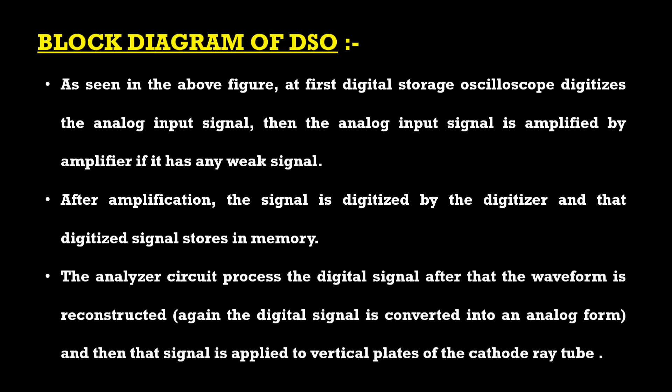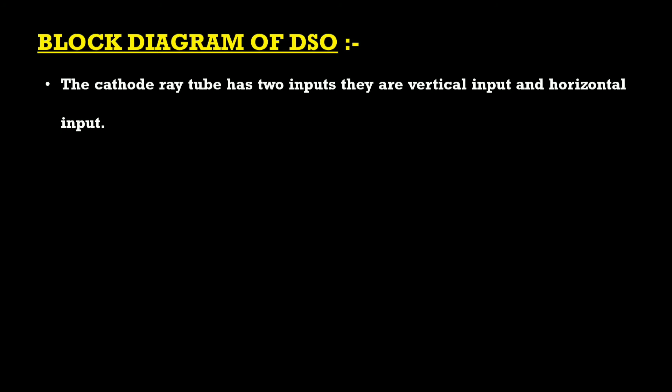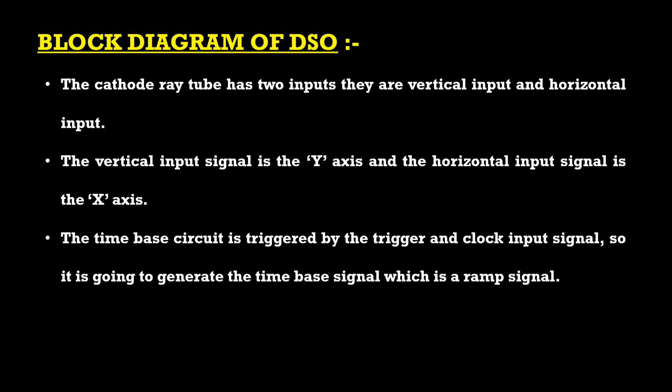The analyzer circuit processes the digital signal, after which the waveform is reconstructed — that is, the digital signal is converted back into analog form. That signal is then applied to the vertical plates of the cathode ray tube. The CRT has two inputs: the vertical input representing the Y-axis and the horizontal input representing the X-axis.